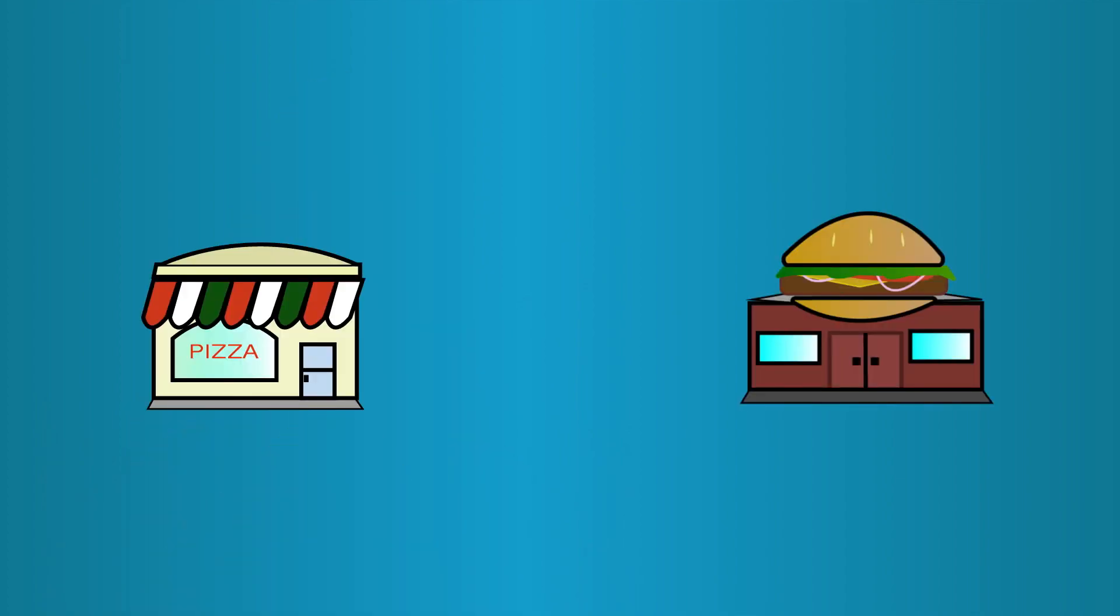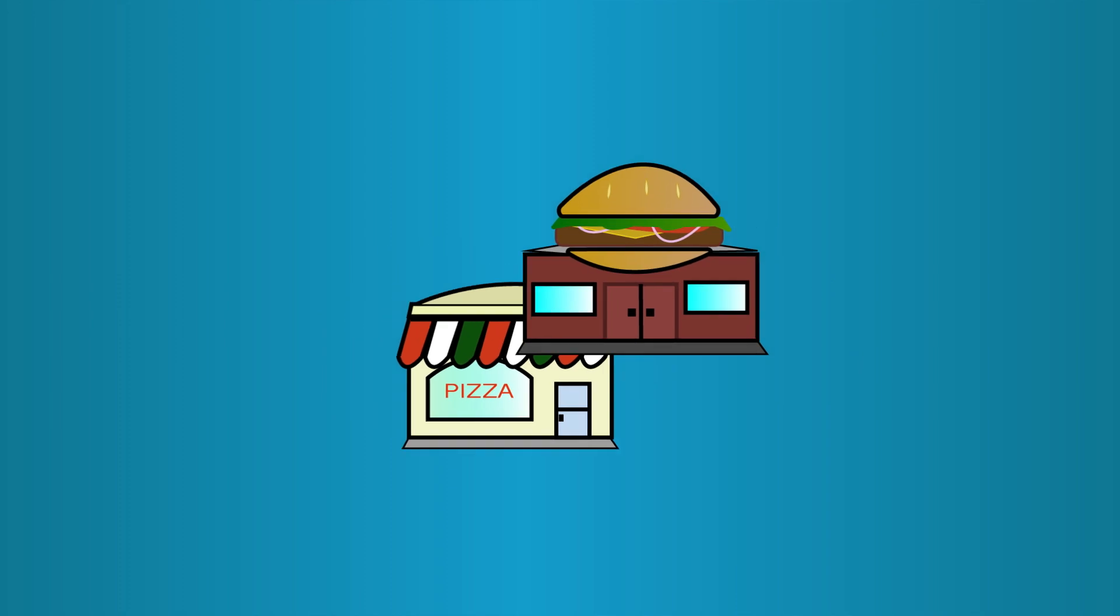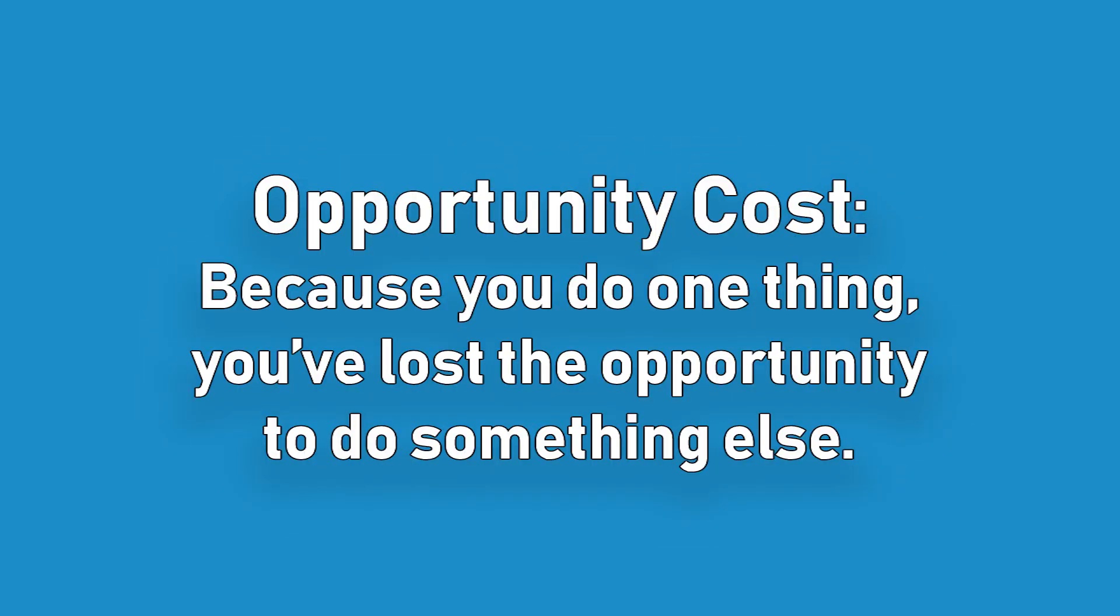Everyone can't have everything all at once. With every expressed preference, there exists a next best option—something you would have done if the first option wasn't available. This is called the opportunity cost. Because you do one thing, you've lost the opportunity to do something else.